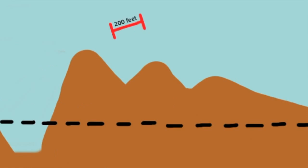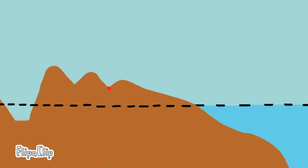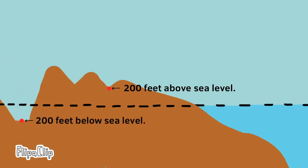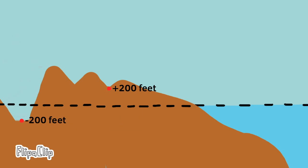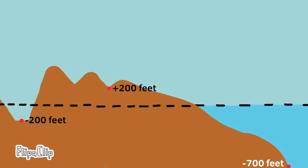This distance represents approximately 200 feet. The elevation of this point on the hill is approximately 200 feet above sea level. The elevation of this point on the valley floor is approximately 200 feet below sea level. 200 feet above sea level would be represented with positive 200 feet, and 200 feet below sea level would be represented with negative 200 feet. Zero feet represents sea level. The further you go below sea level, the larger the negative number. The further you go above sea level, the larger the positive number.